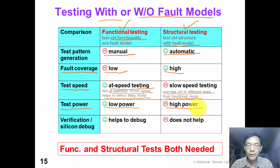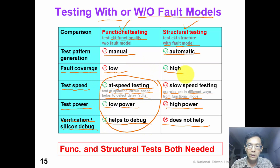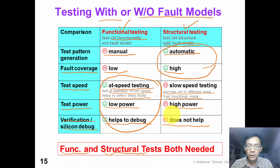Finally, for verification and silicon debugging, functional testing is very useful because test patterns are written by designers — if the circuit fails, designers can debug what's wrong. On the other hand, ATPG patterns are random, so designers cannot easily debug failures. Overall, both functional testing and structural testing have their own strengths, and both are needed for different reasons.